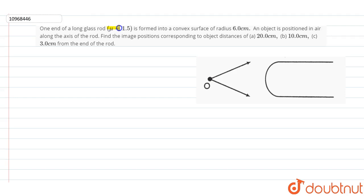The question given is that one end of a glass rod is formed into a convex surface of radius 6.0 cm. An object is positioned in air along the axis of the rod. Find the image positions corresponding to object distances of 20 cm, 10 cm, and 3 cm from the end of the rod. This is a very simple question.